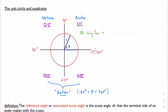If I move into quadrant 2, now I'm dealing with negative x values, positive y values, and always a positive radius. If I draw out my triangle here, I have a negative here and a positive here and a positive there. The only time I'll have positive trig values is with the opposite and hypotenuse, which is my sine function. So only sine is positive in quadrant 2.